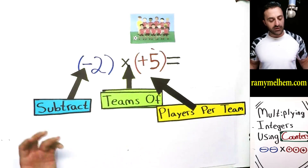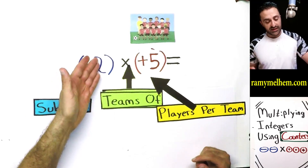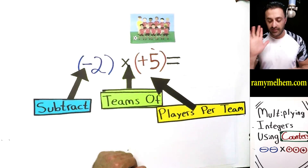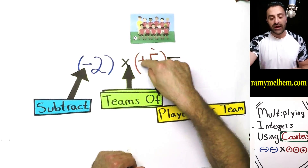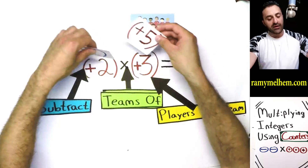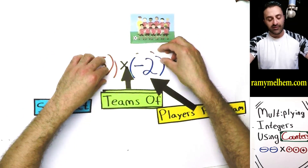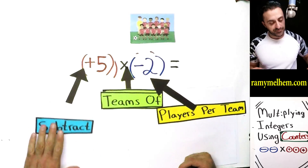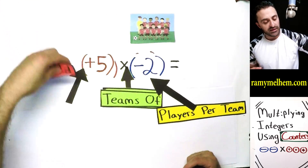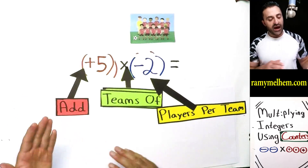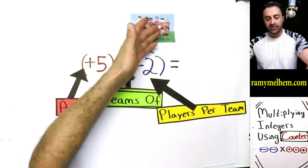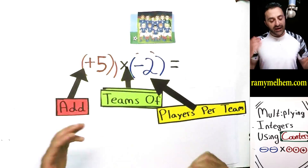This still says 'subtract,' this still says 'two teams of,' but now how many players are on the teams? Five — there are five red guys on each team. We have to subtract two of those teams, get rid of them. How about if I reversed it? Now I'm going back — I'm adding five teams of negative two. I need the blue team. I need to add those teams.